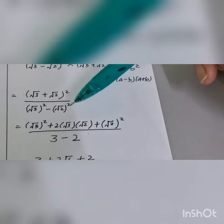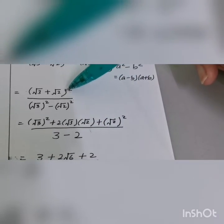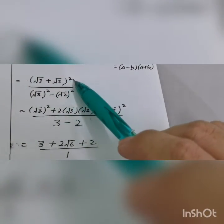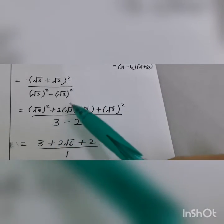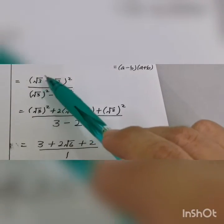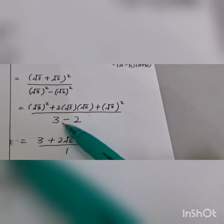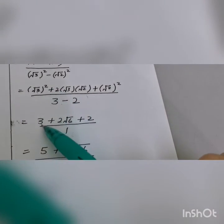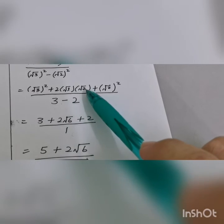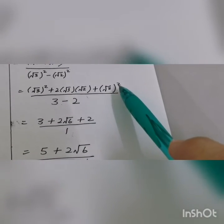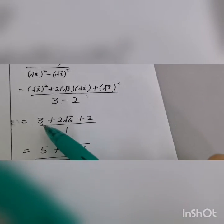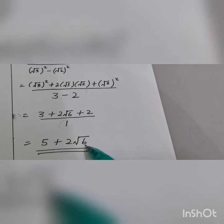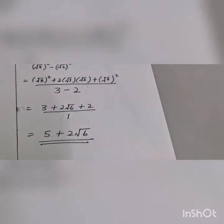For the numerator, use the (a + b)² formula: a² plus 2ab plus b². Here a is square root of 3 and b is square root of 2. So a² is 3, then 2 times square root of 3 times square root of 2 gives 2 square root of 6, and b² is 2. The denominator is 1, so 3 plus 2 is 5. The final answer is 5 plus 2 square root of 6. No further simplification is possible.